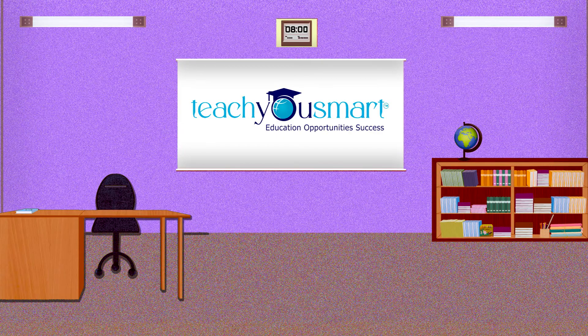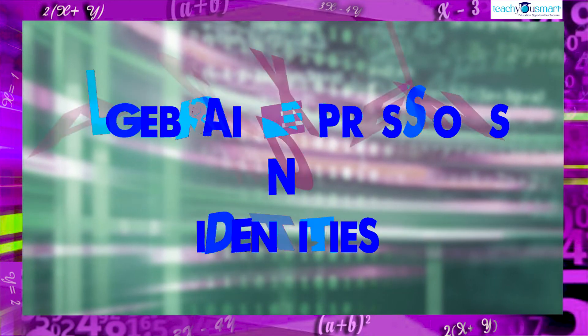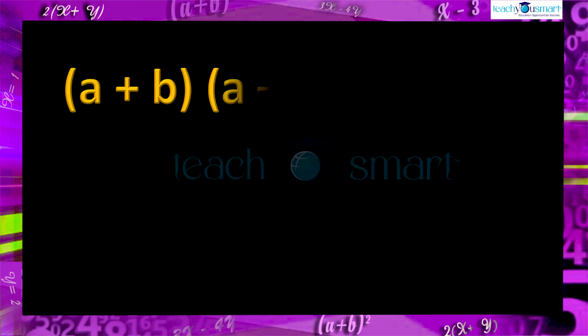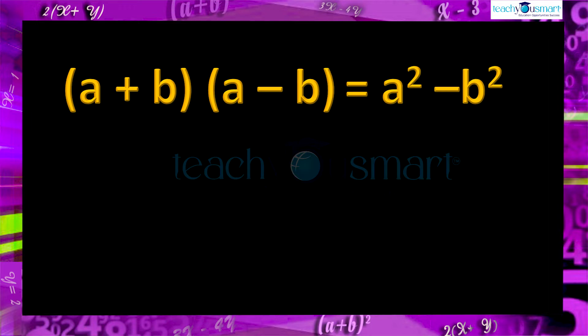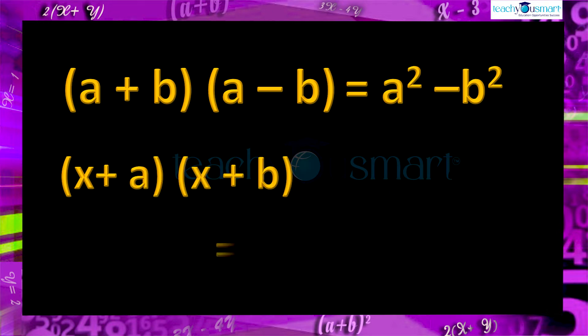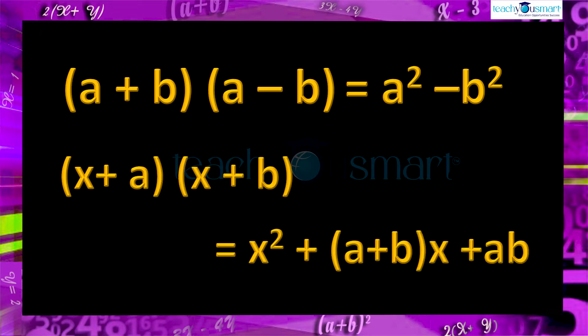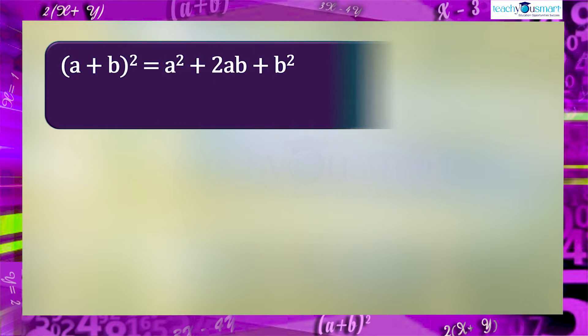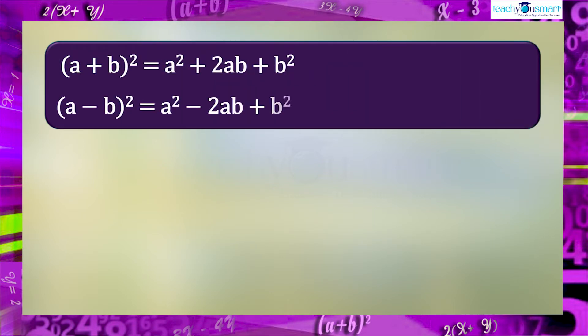Hello students, let's continue our journey through algebraic expressions and identities. Today we are going to discuss the identities such as (a+b)(a-b) = a²-b² and (x+a)(x+b) = x²+(a+b)x+ab. In previous videos we learned these identities and how to solve problems using them.